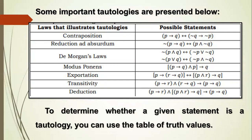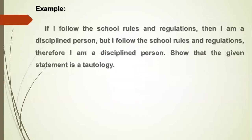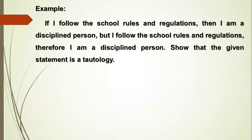To determine whether a given statement is a tautology, you can use the table of truth values. Example: If I follow the school rules and regulations, then I am a disciplined person. But I follow the school rules and regulations. Therefore, I am a disciplined person. Show that the given statement is a tautology.